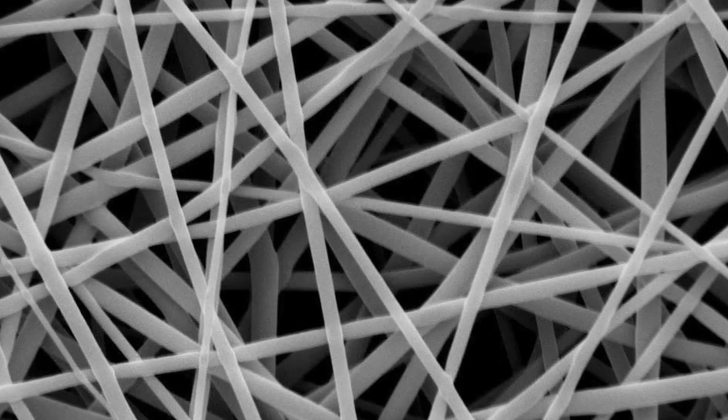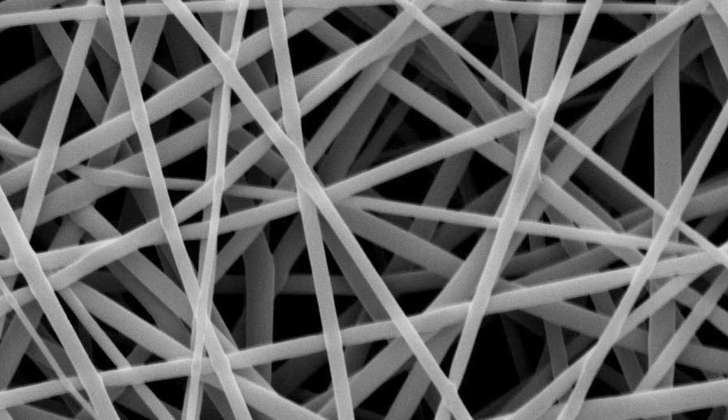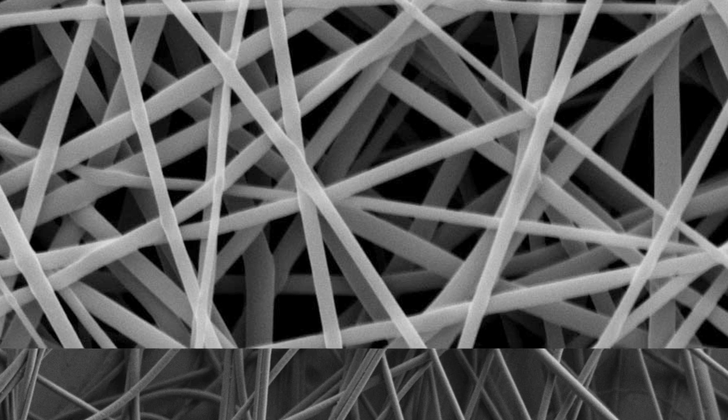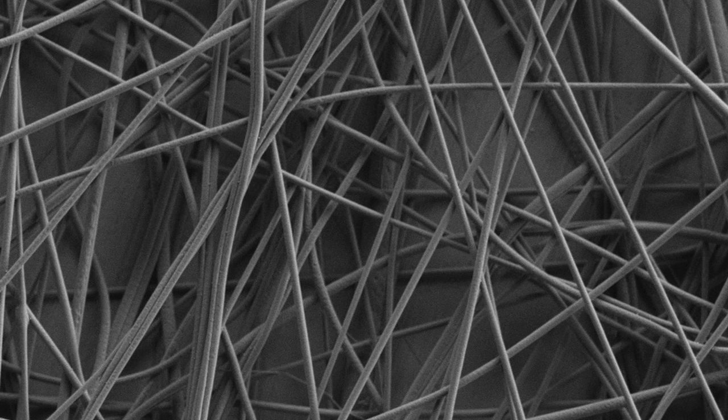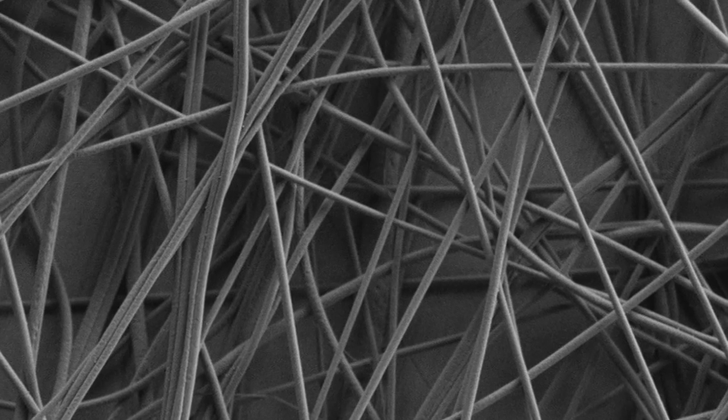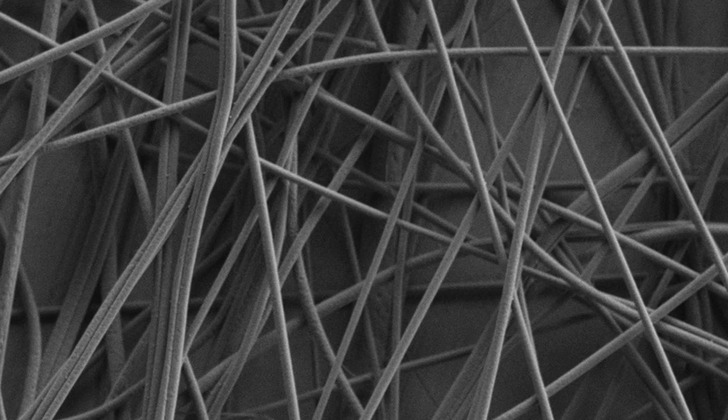Electrospinning is the process of using high electric fields to draw very fine fibers from a liquid. Electrospun fibers only a couple hundred nanometers in diameter have a wide range of possible uses, but the cost of producing them has limited them to very few high-end applications.